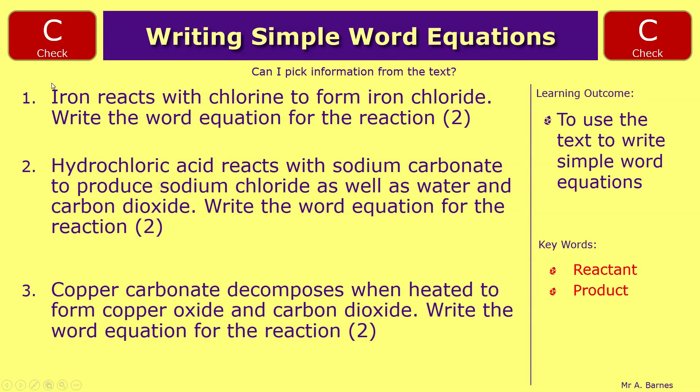Okay, let's go through then. So the first one, you should have got iron plus chlorine, arrow, iron chloride. So you get one mark for your reactants and one mark for your product.